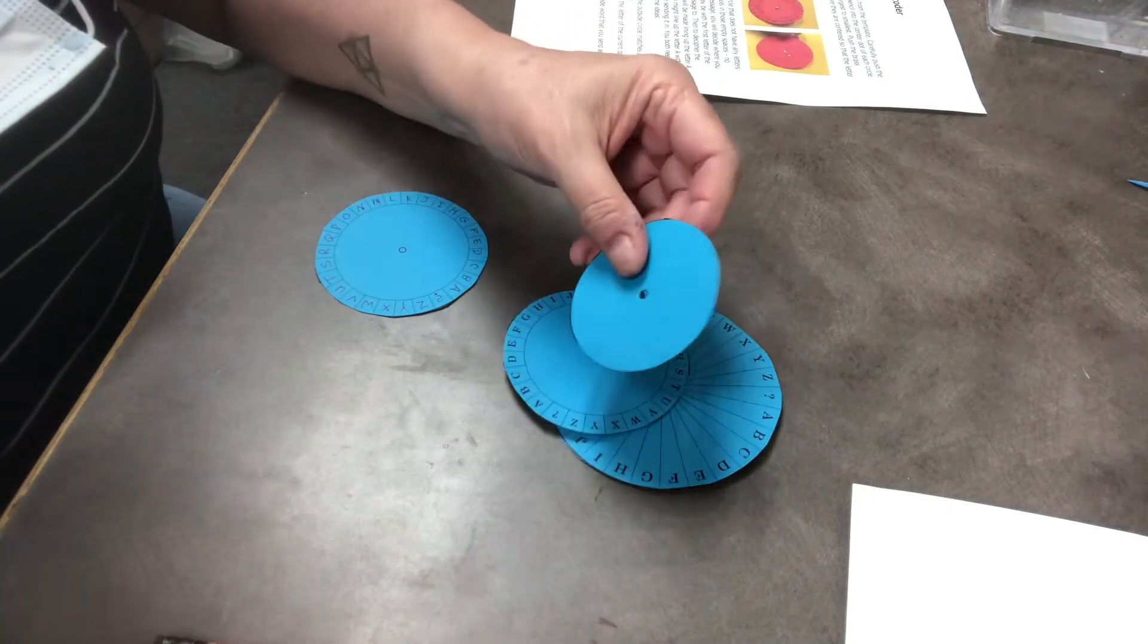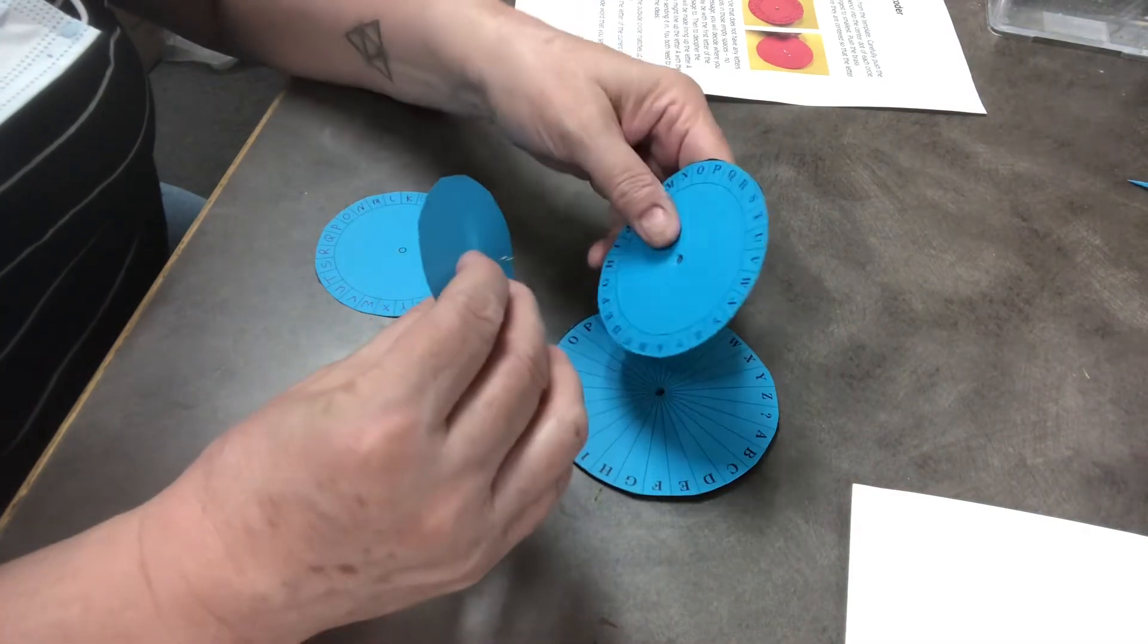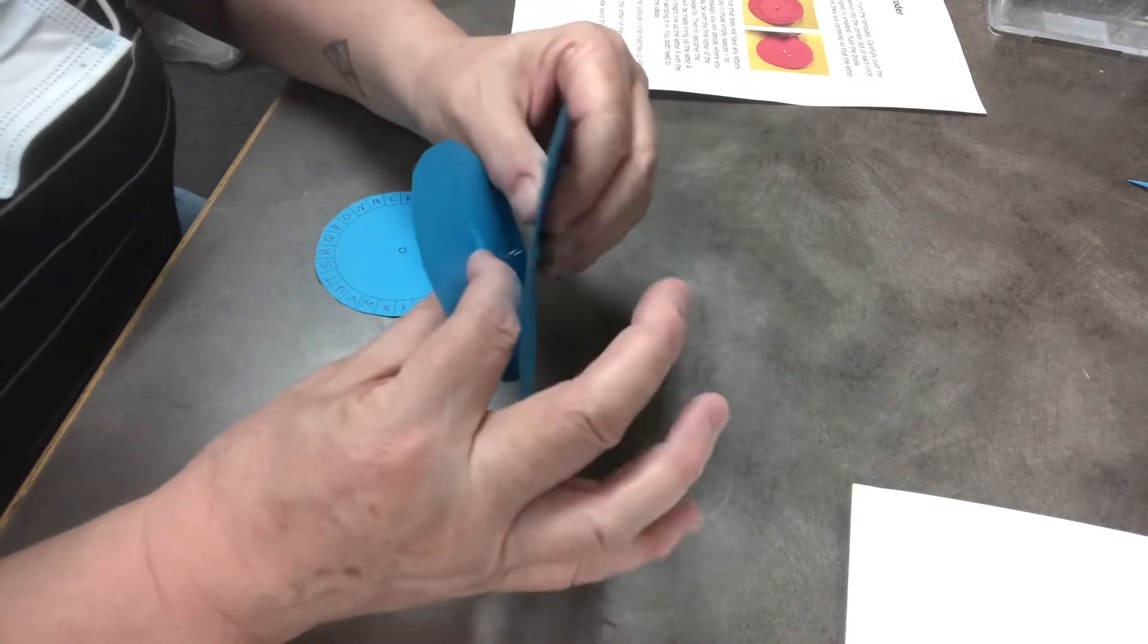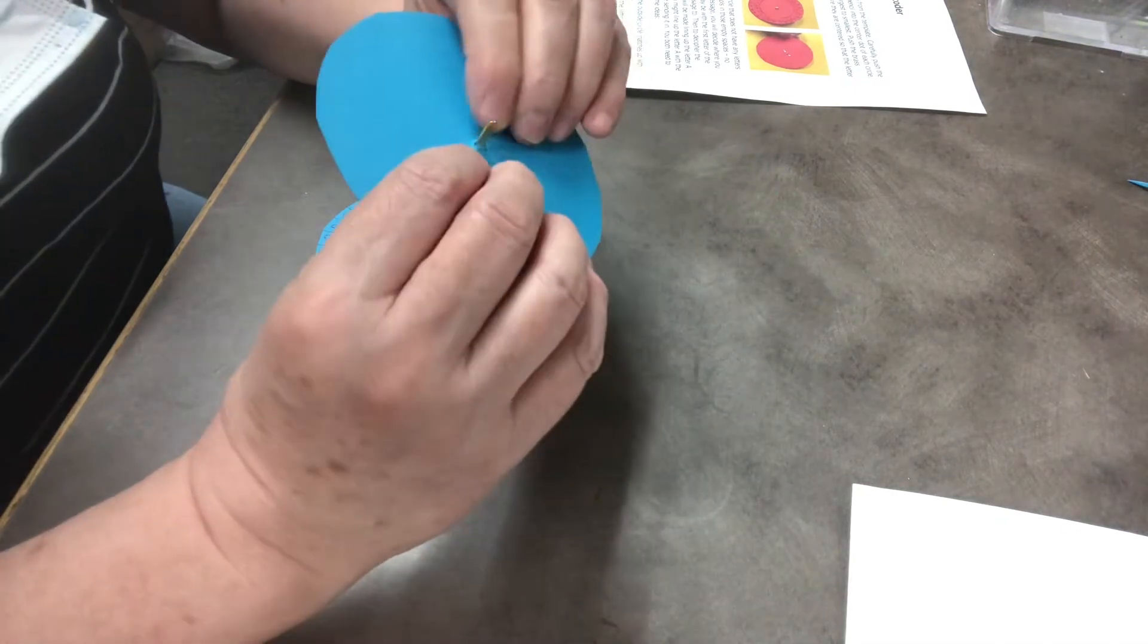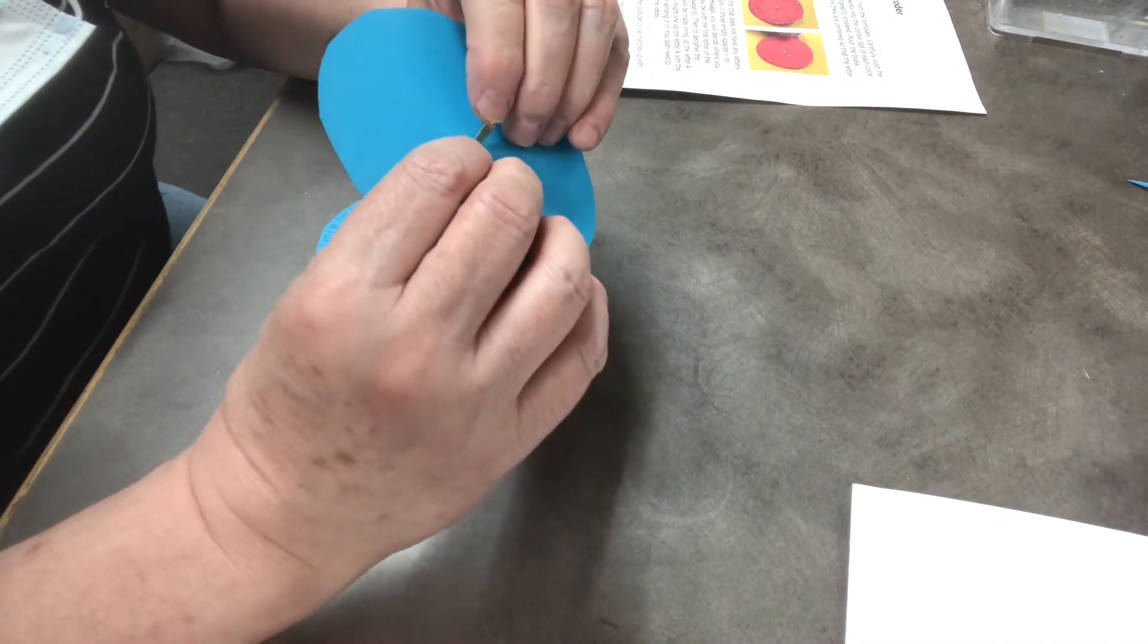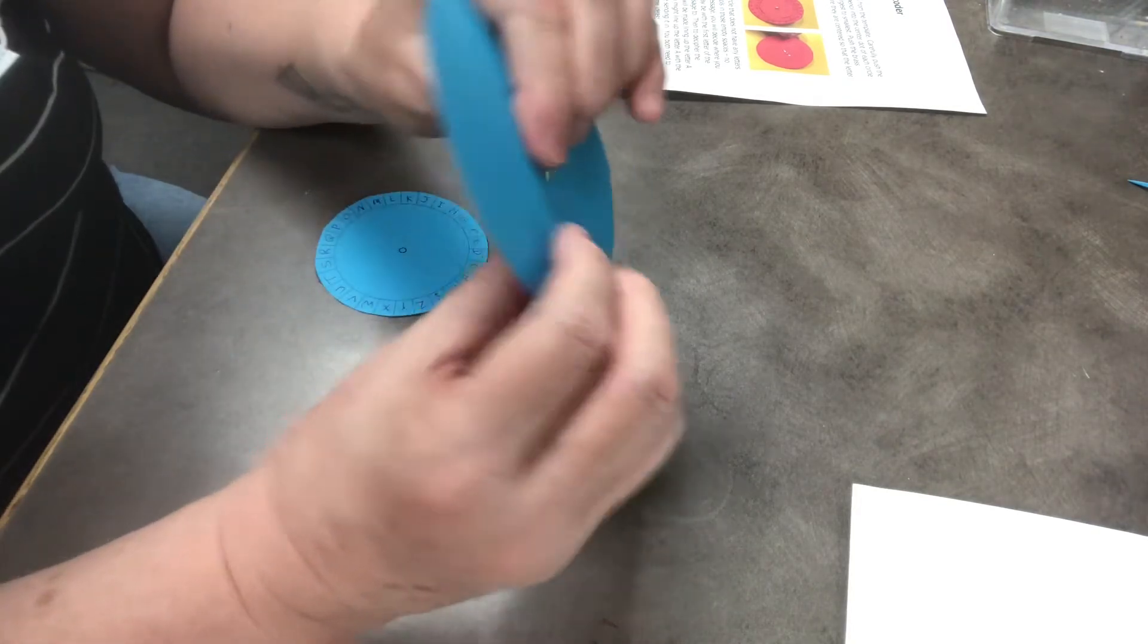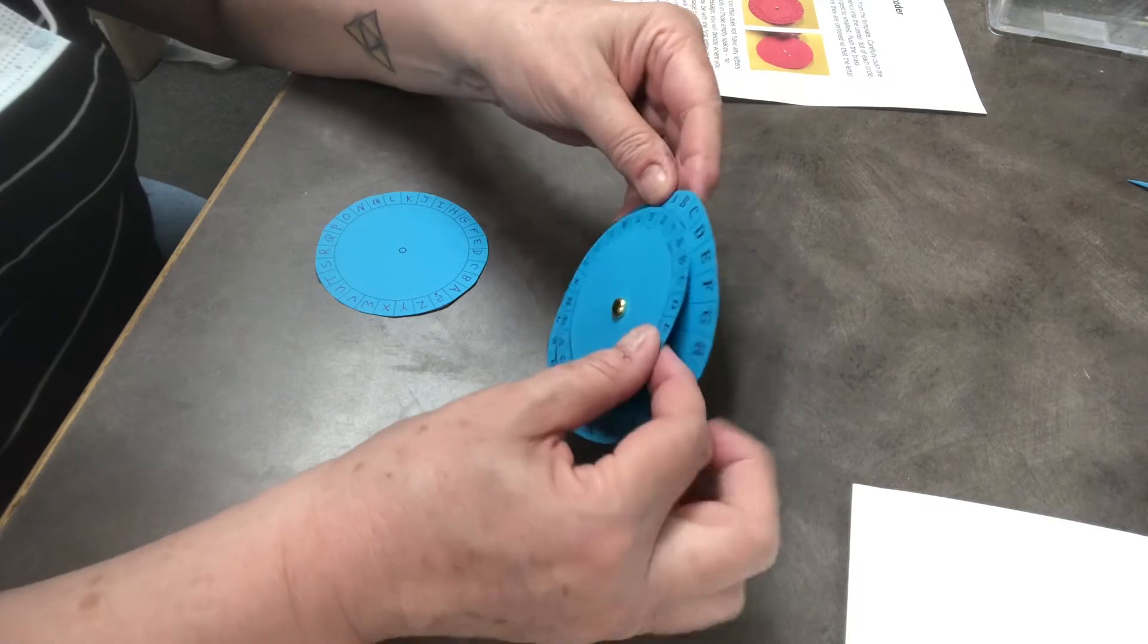So you're going to line these up. Put the brass fastener through your center on the little ring. Then through the middle ring. And through the outer ring. Now we're going to spread these fasteners. Just like that. That's what opens it and holds it in place. So now these can all twirl. And if you line them up.